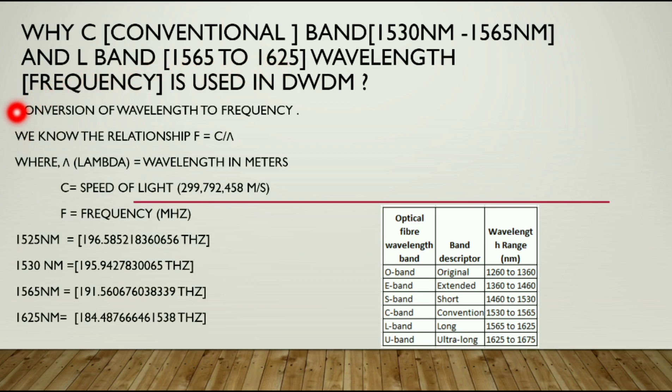First we know the conversion of wavelength to frequency. We all know the relationship F equals C by lambda, so C is the speed of light and F is equal to frequency.